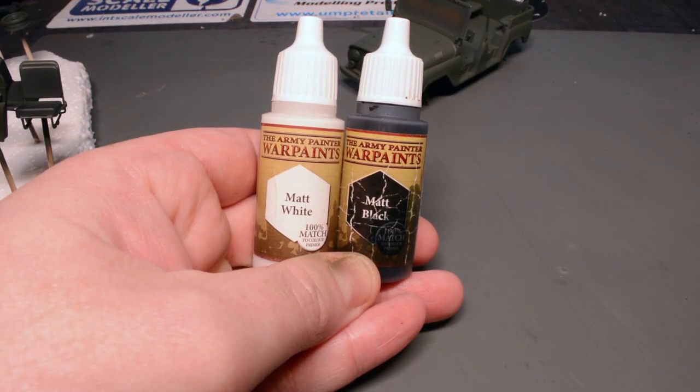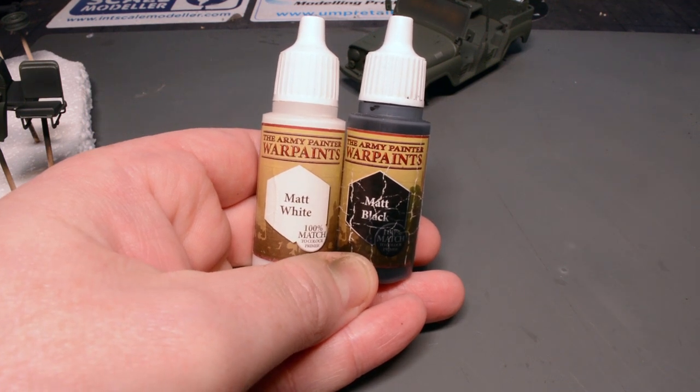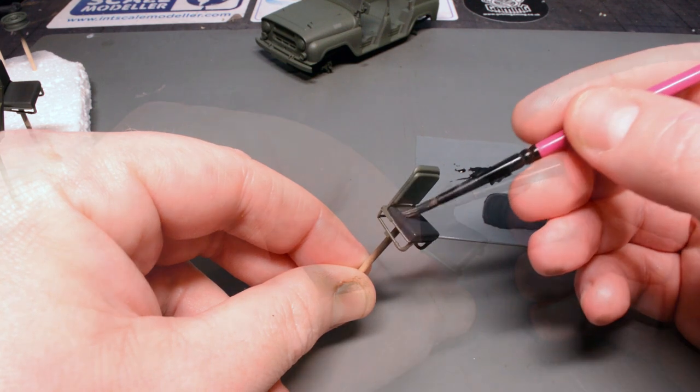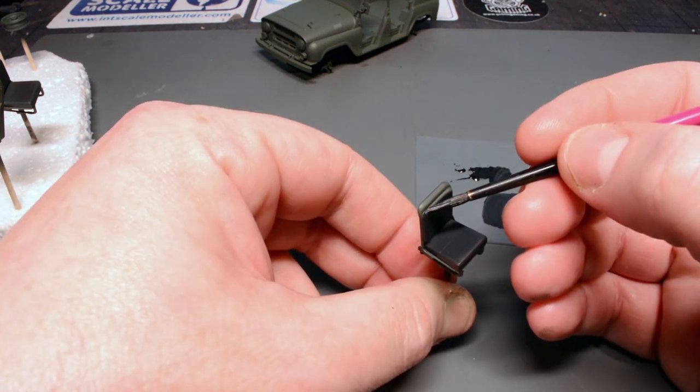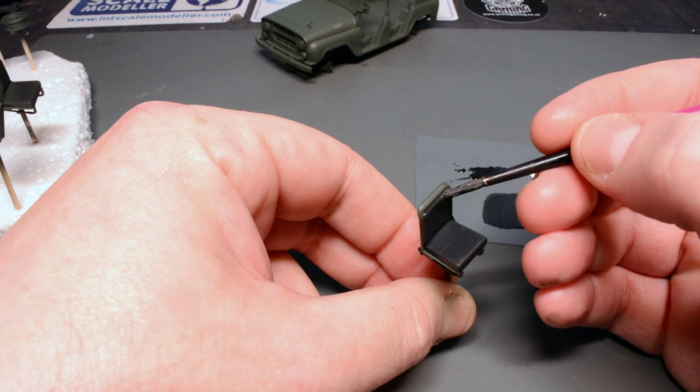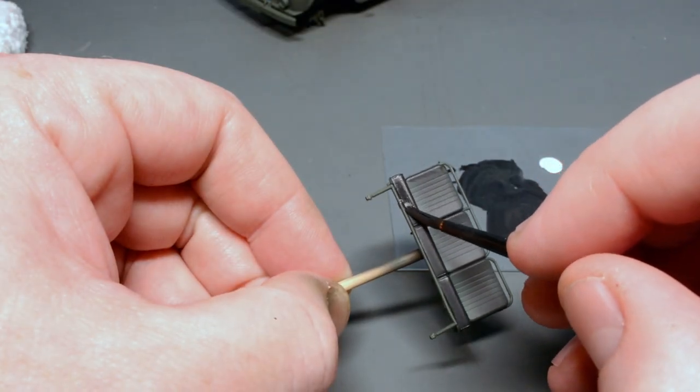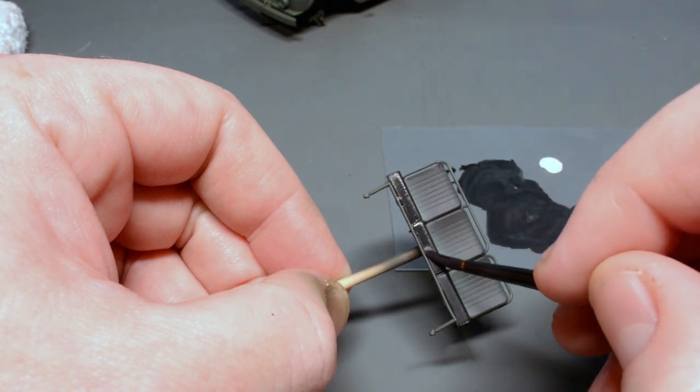Using Army Painter Warpaints Matte White and Matte Black I mixed up a nice dark grey and I used this to block in the seat cushions. I used a large brush for good coverage and to get the job done nice and quickly but I did take extra care around the outside of the cushions just to make sure I didn't get any of the dark grey on the really nice seat frame details.